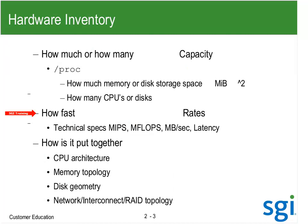When I get to a system I want to know three things: what do I have, what are its technical specs, and how is it put together? The 'what do I have' is how much and how many — a capacity question. Most of this comes from /proc. I want to know how much memory and how much disk space I have. When dealing with capacity, things like memory or disk storage are generally a power-of-two type number.